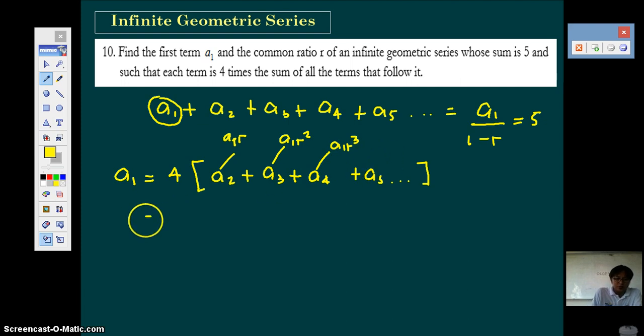So the sum of this infinite geometric series is also using the formula, the first term in the numerator, which in this case is a2. Now let's write it as a1r over 1 minus r, since the common ratio is still r. So here we have an equation. Now notice that this part, a1 over 1 minus r.